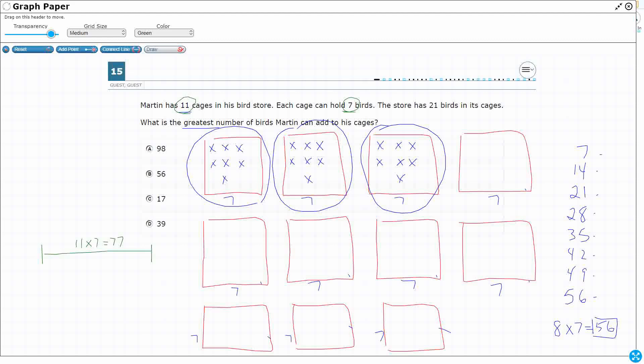I already have 21 birds in my cages, so what I need here is a part, part, whole. So I've got my 21 that I've already taken, and then my unknown is what is the greatest number of birds that I can add to my cages. All right, so it looks like it's just a basic part, part, whole.